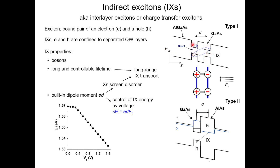By putting electrons and holes in the same quantum well layer, as on the left of the diagram, they form what's called a direct exciton, where the electron and hole are right next to each other. But you can create something else called an indirect exciton — shown by the other oval — where the electron and hole are kept at different positions in the material.